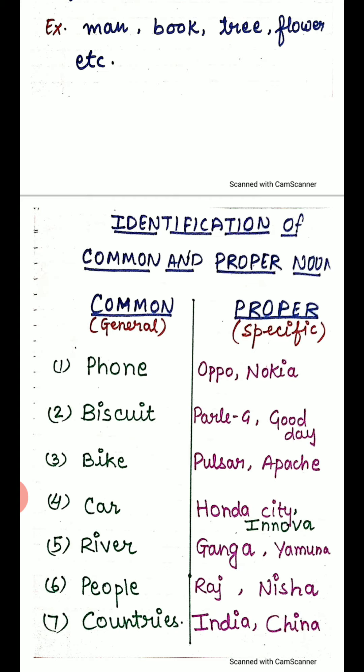People are many, but when I point out a specific person, a particular person, I will give a name, and that name is a proper noun — such as Raj, Nisha.